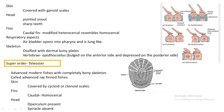Good morning dear students. Today we are going to continue the remaining portion of the chapter on superclass Pisces. We are continuing with the last super order, Super Order Teleostei. Under this super order are included almost all presently existing fishes. They are advanced modern fishes with a completely bony skeleton and they are called advanced ray-finned fishes.